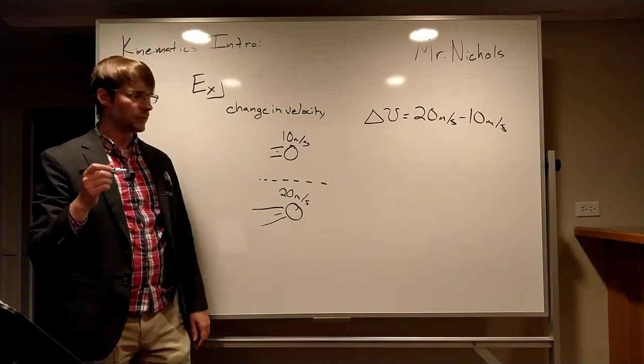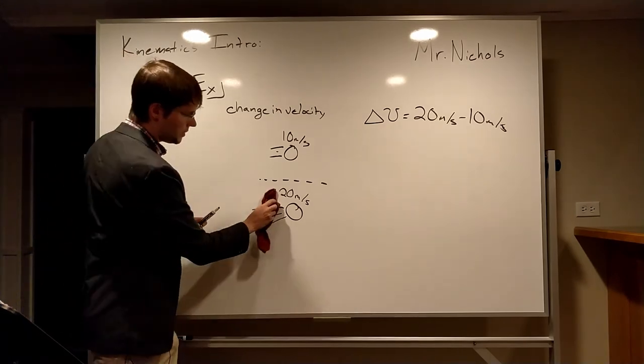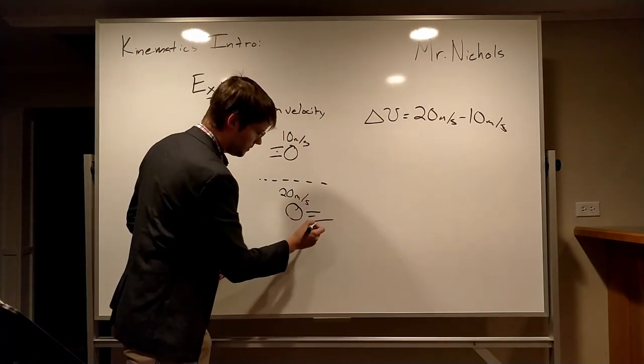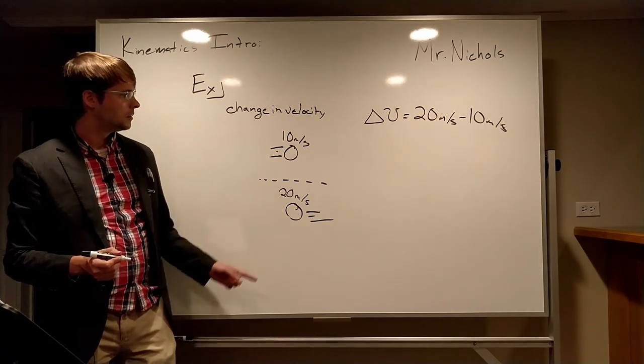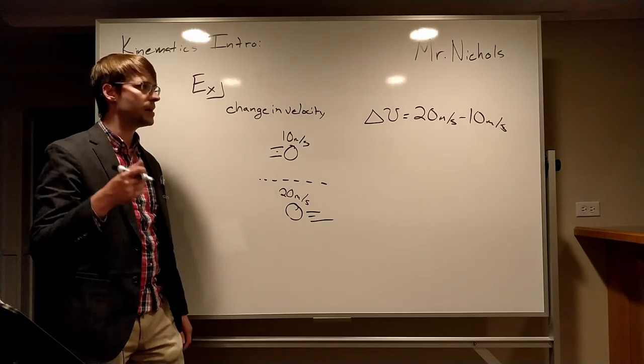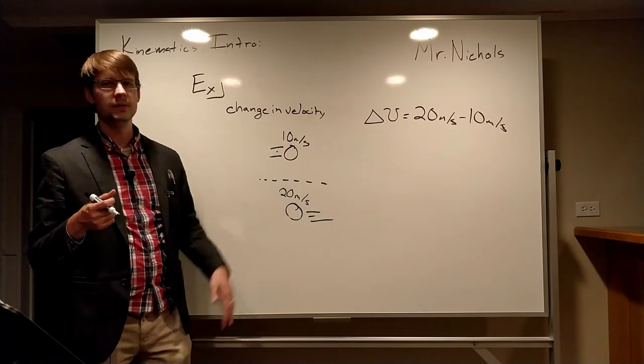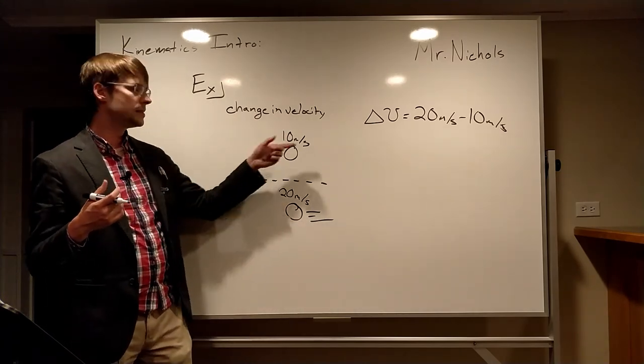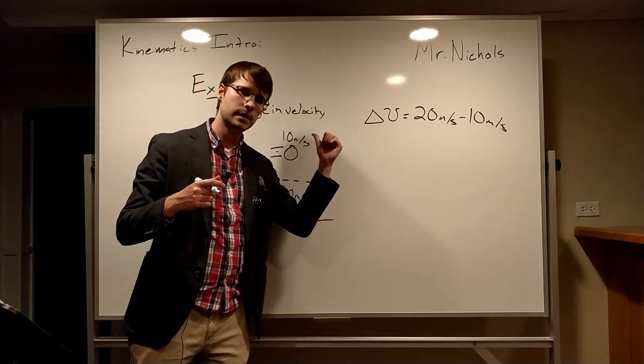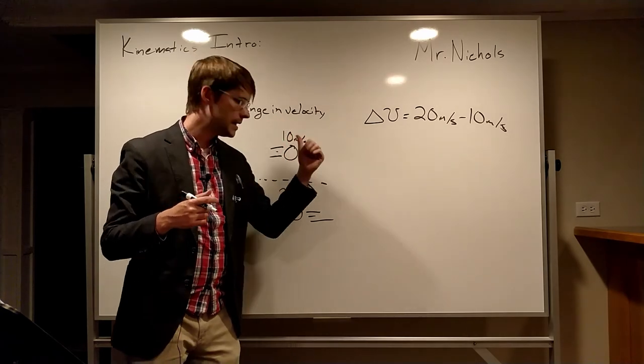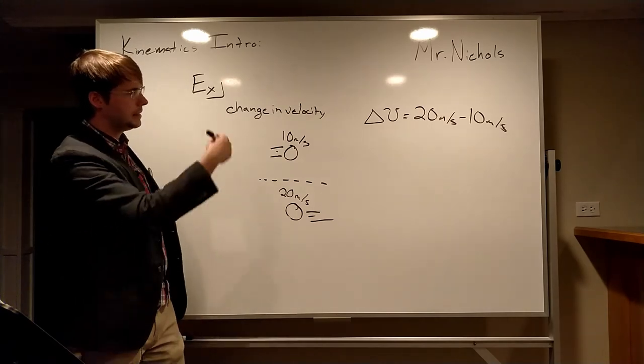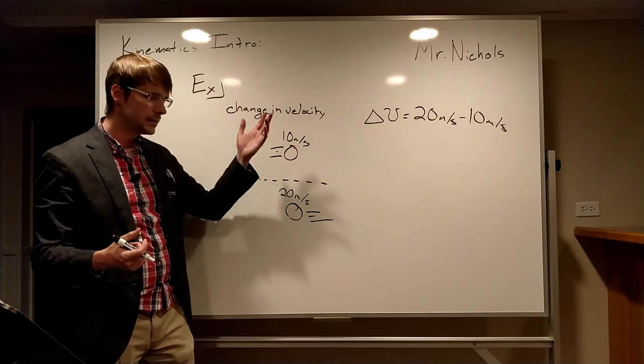However, we need to pay attention to direction. In this case, if instead this ball was moving to the left, it's still going 10 meters per second at the beginning, 20 meters per second at the end. But when we look at this change in velocity, we need to see it's 20 minus 10 would give you 10, but that's not what we have in this case. This is to the left, this is to the right. And so at the beginning it's moving to the right. We first had to slow it down all the way to zero, that's 10 meters per second change to the left. And then we get to speed it up all the way to 20 to the left.